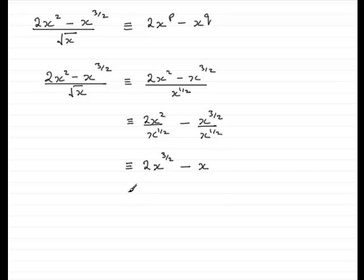So when I compare this to 2x to the power p minus x to the power q, you can clearly see that p has the value 3 over 2, and q has the value 1. So we needed to specify the values of p and q, and that's now been done.